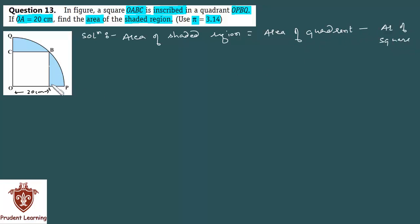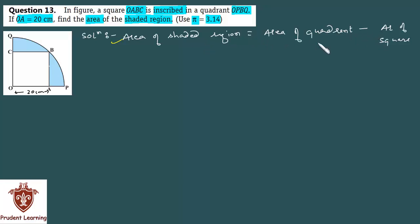Quadrant OPBQ है और square OABC है — exam में आपको नाम लिखना चाहिए. एक-एक करके हम quadrant और square के area find कर लेते हैं, फिर इस equation में substitute कर देंगे और आपको shaded region का area मिल जाएगा.